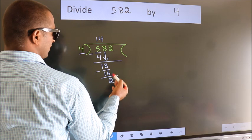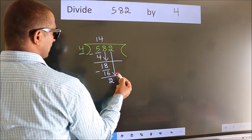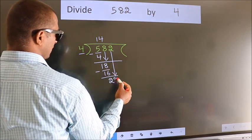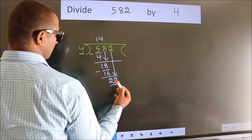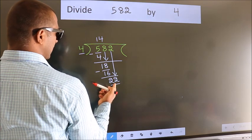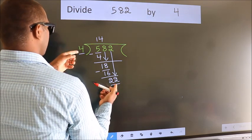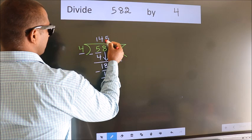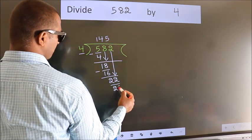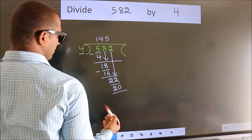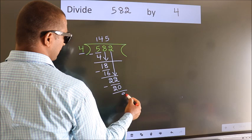After this, bring down the beside number. 2 down, so 22. A number close to 22 in the 4 table is 4 5s 20. Now, we subtract. We get 2.